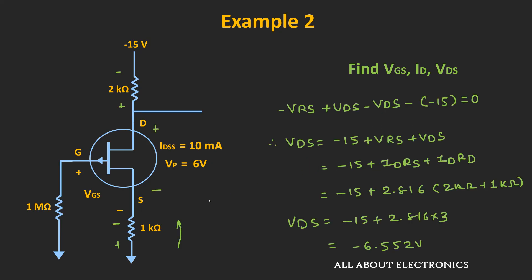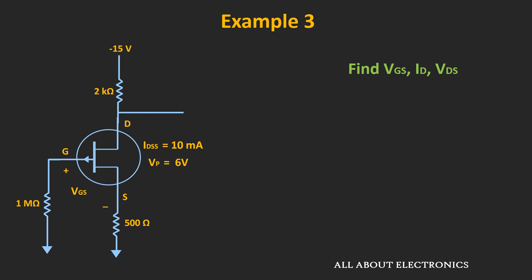By changing the value of the source resistor RS, we can change the operating point of the circuit. As a practice problem, change RS from 1 kΩ to 500 Ω for the P-channel JFET circuit and find the new values of VGS, ID, and VDS. Share your answers in the comment section, and also verify that the circuit is still operating in the saturation region.